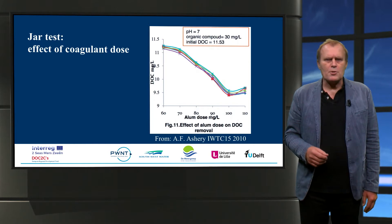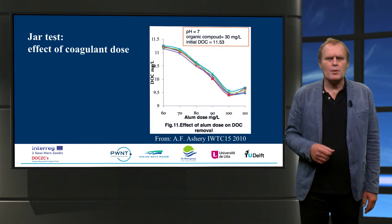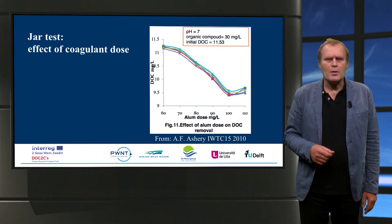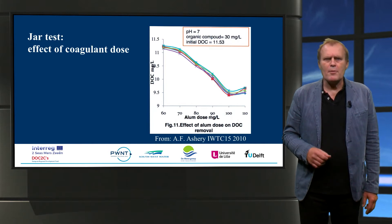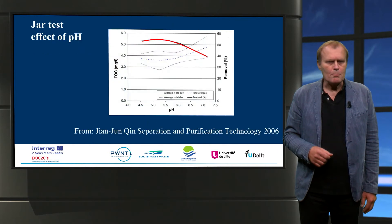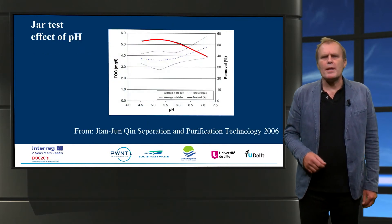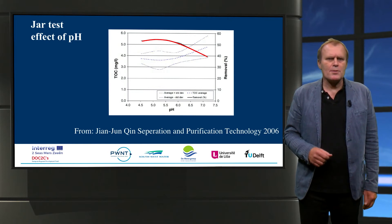The removal of natural organic matter increases with the coagulant dose in this water type. However, the removal of organic matter is only 70% at a coagulant dose of 100 mg aluminum per liter, so coagulation is not very effective in this water type. The removal of organic matter is more efficient at lower pH — in this water type, organic matter removal increases above 50% at lower pH values.